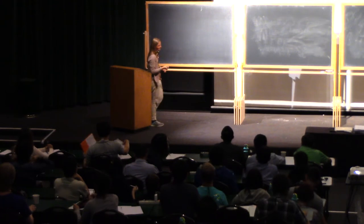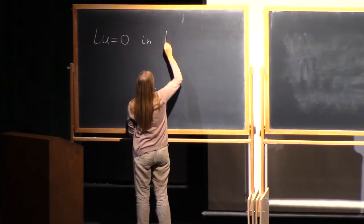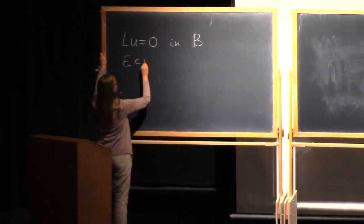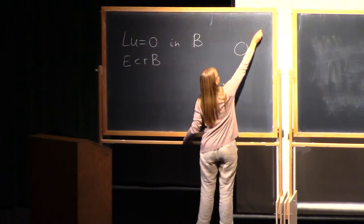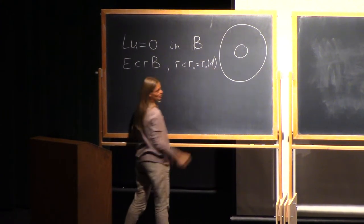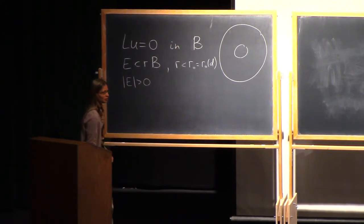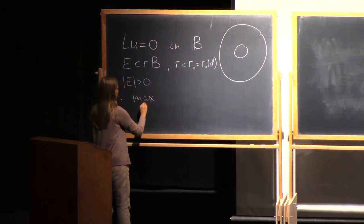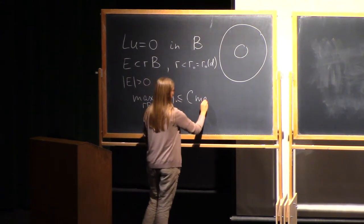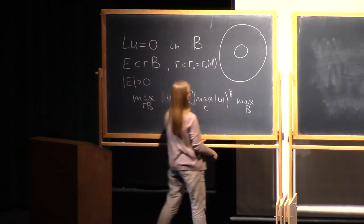Let me repeat the result that we formulated last time. We have a solution of this equation in some ball B. We have a subset of a smaller ball here, depending on the dimension. And we assume that the measure of E is positive. Then what we want to prove is that the maximum over the ball of our solution u is bounded by the maximum over this set of positive measure times the maximum over the big ball.